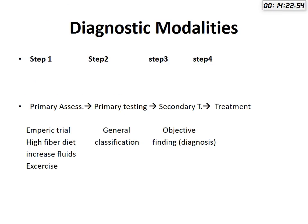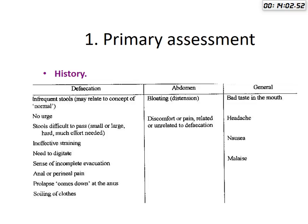The diagnostic modalities of chronic constipation include step one, which is the primary assessment, followed by empirical treatment with high fiber diet, increased fluid intake, and exercise. The patient then shifts to primary testing for general classification of the constipation, then secondary testing, and finally the first step in treatment.